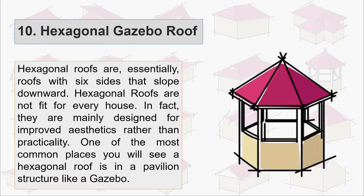Tenth is hexagonal gazebo roof. Hexagonal roofs are essentially roofs with six sides that slope downward. Hexagonal roofs are not fit for every house. In fact, they are mainly designed for improved aesthetics rather than practicality. One of the most common places you will see a hexagonal roof is in a pavilion structure like a gazebo.